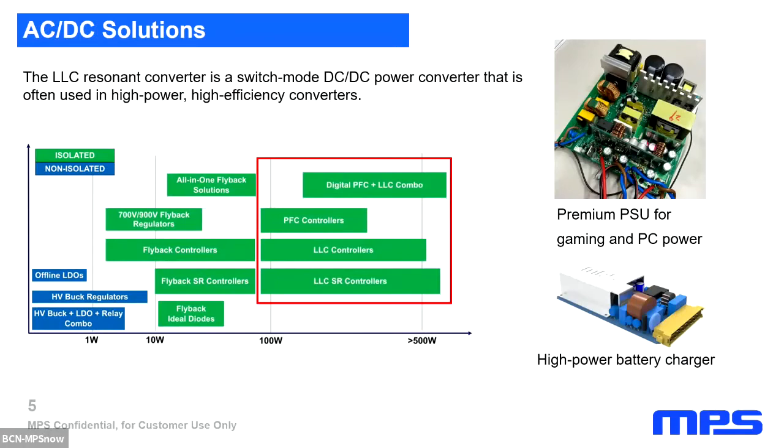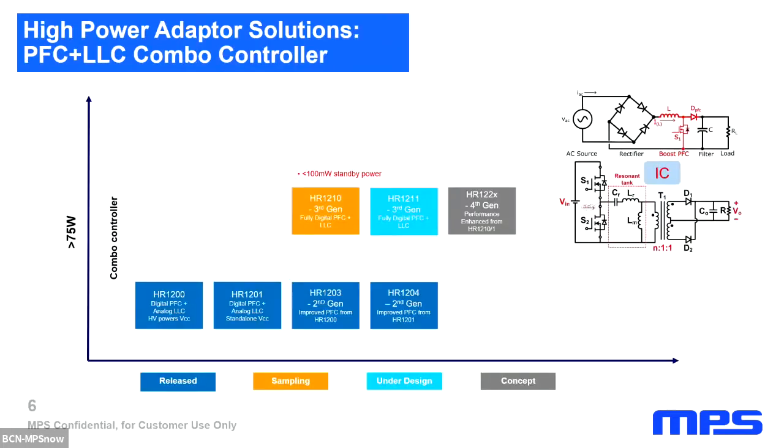LLC resonant converters are switched mode DC-DC power converters often used in high power, high efficiency applications. The reason is that LLC converters offer high switching frequencies and lower switching losses. This makes them ideal for high power applications where efficiency is key, such as high quality PSUs for gaming and PCs and high power battery charging for applications such as electric vehicles. MPS currently offers several LLC controllers, the newest of which are the HR1210 family, which will be discussed during this presentation.